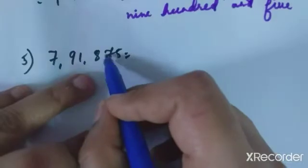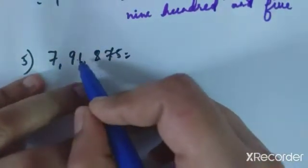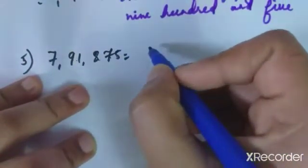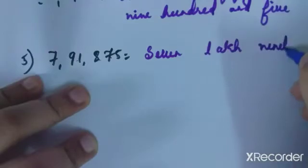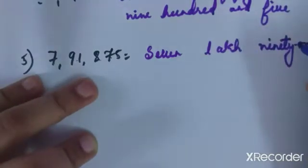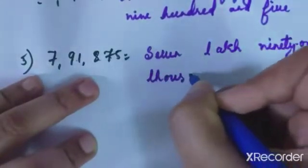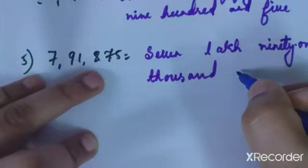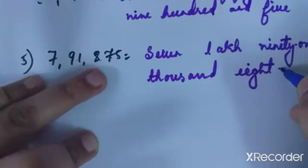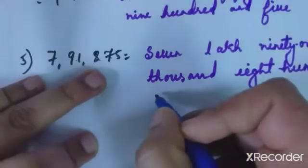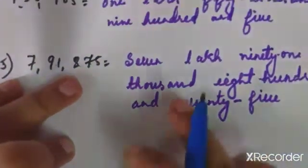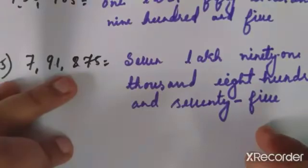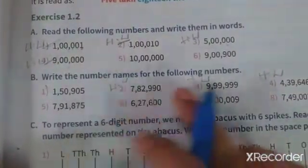Now you have to write in words: seven lakh ninety one thousand eight hundred and seventy-five. You need ones, tens, hundreds, thousands, ten thousands, and lakhs. So this is seven lakh ninety one thousand eight hundred and seventy-five — that is what you have to write in words. The same way, you have to complete the second, third, and fourth questions.